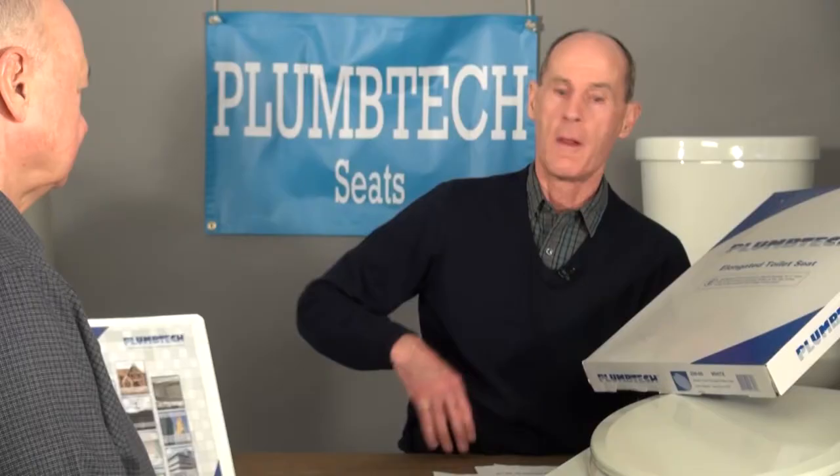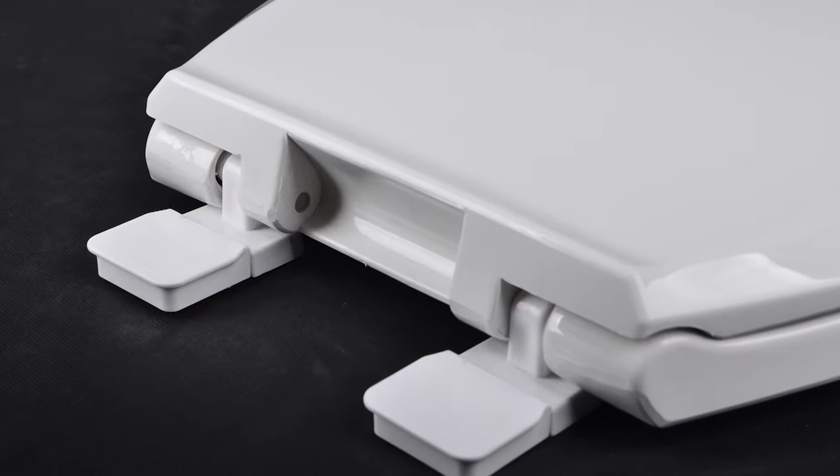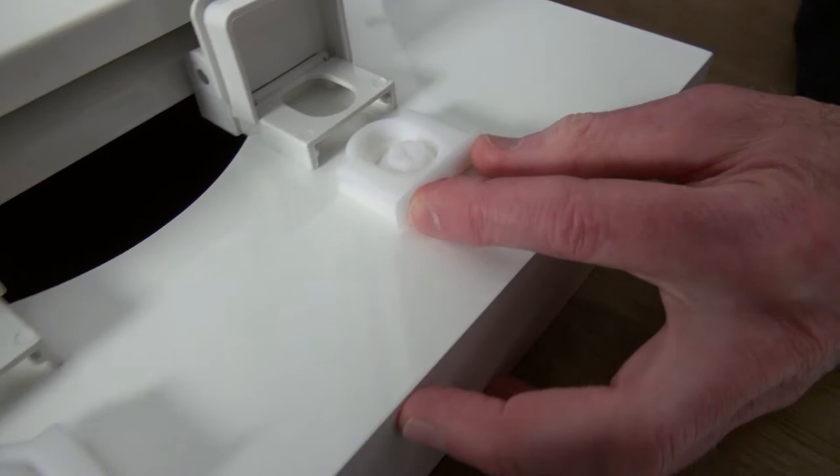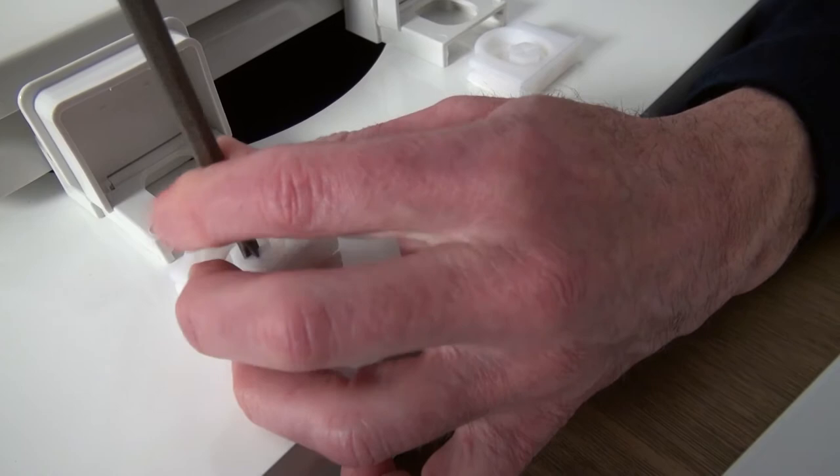The PlumTech brand of seats is designed for the professional plumbing contractor. The founders are the same guys who pioneered the adjustable hinge to minimize callbacks because the seat would not properly fit the toilet bowl. They developed and engineered an integrated seat hinge and mounting hardware design to keep the seat from working loose and creating a callback.